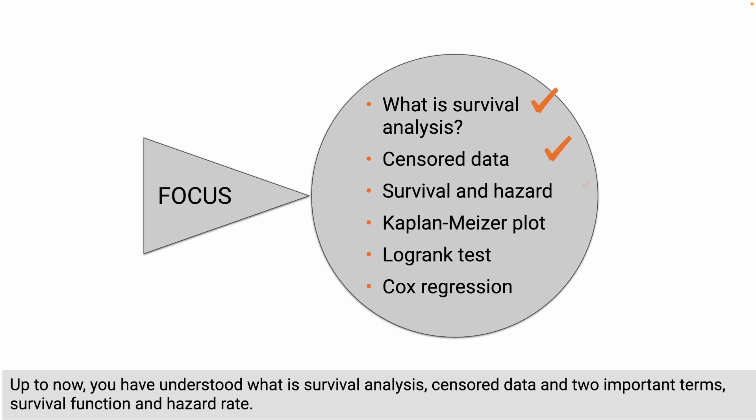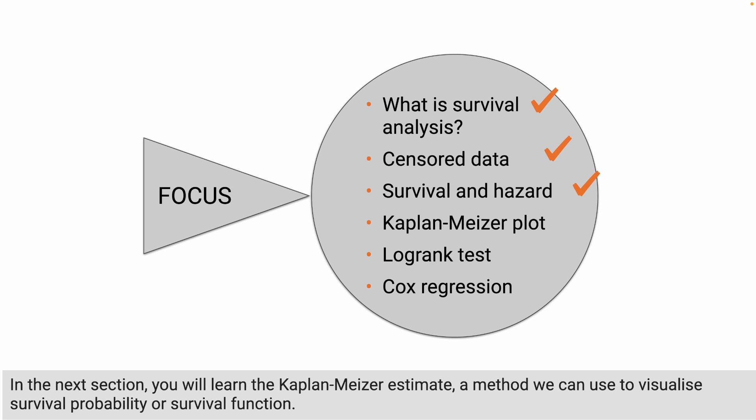Up to now, you have understood what survival analysis is, censored data, and two important terms: survival function and hazard rate. In the next section, you will learn the Kaplan-Meier estimate — a method we can use to visualize the survival probability or survival function. See you in the next tutorial. Thank you.